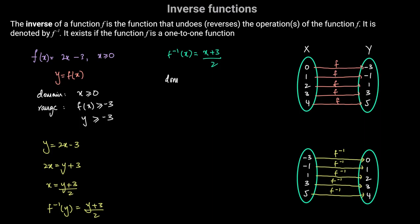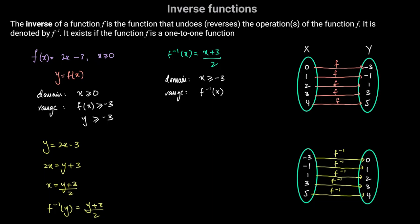What is the domain and range of the inverse function? The domain of the inverse function — the set of inputs for f inverse — is the set of outputs of f, which is the range of f. So the domain of f inverse is x greater than or equal to negative 3. The range of f of x is the domain of f inverse of x.